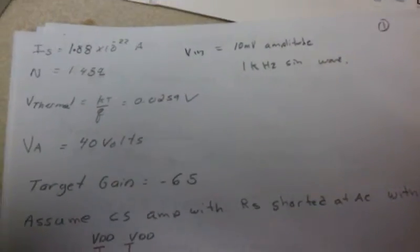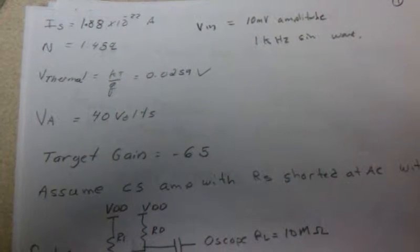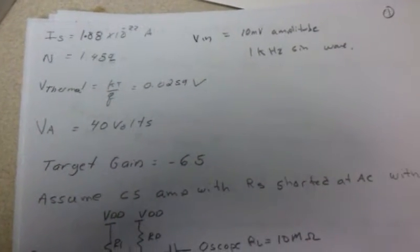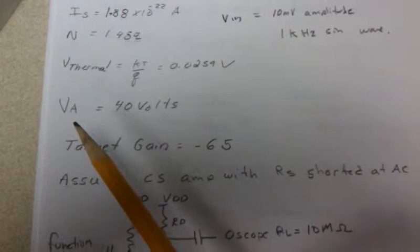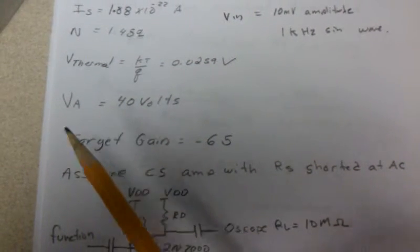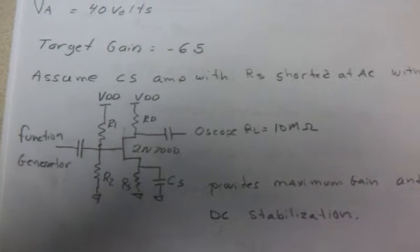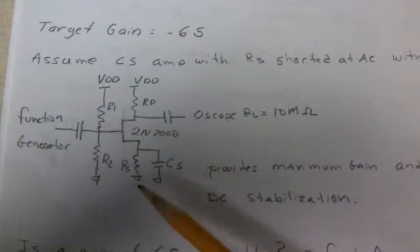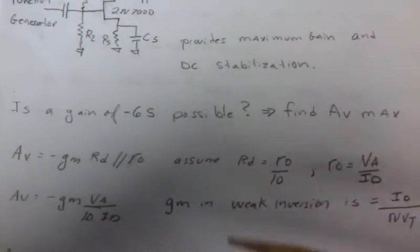Here we have another video from Shaky Hand Productions and we're going to design a common source amplifier for minus 65 and see how process variations of IS, thermal voltage, the early voltage, plus variances in R1, R2, RD, and RS affect the gain. First we're going to assume a common source amplifier with RS shorted in AC that will give us the maximum gain and some DC stabilization.